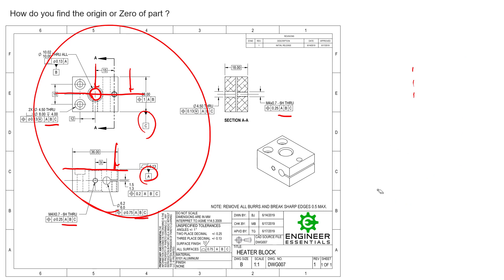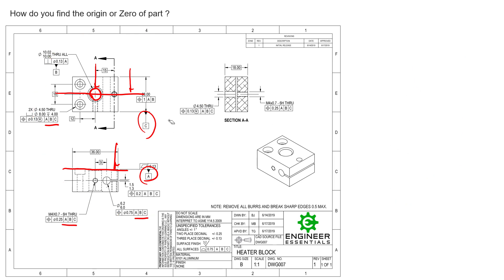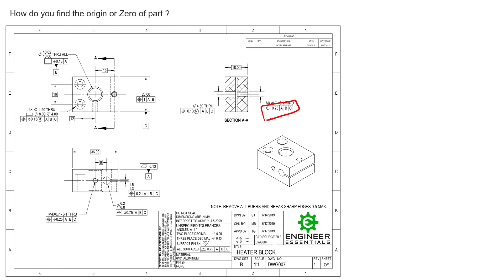Now, if this part has a single datum reference frame, does that mean all parts have a single zero-zero-zero point? The answer is no. Some complex parts might utilize two datum reference frames, and some complex parts might actually utilize dozens. It just depends on the complexity of the part and how the designer used those datum reference frames. So really what we need to ask is: what's the zero or origin of any given feature control frame?